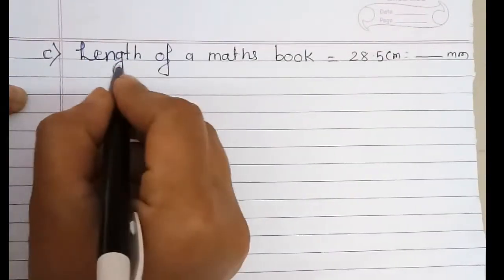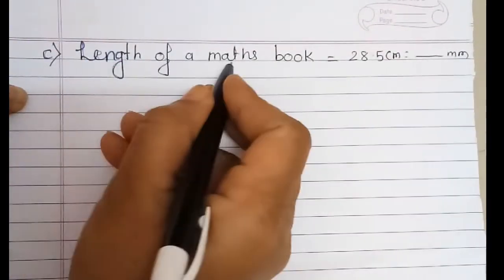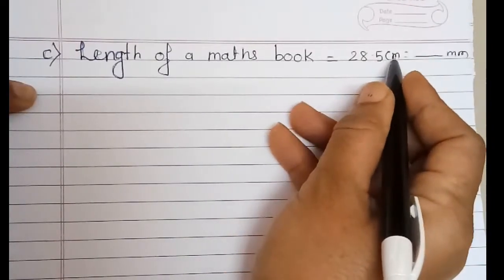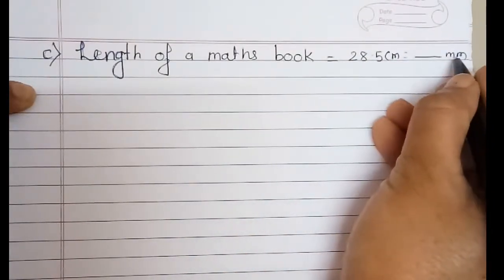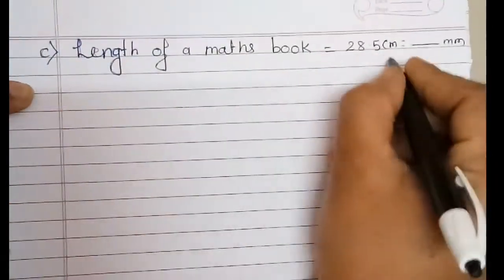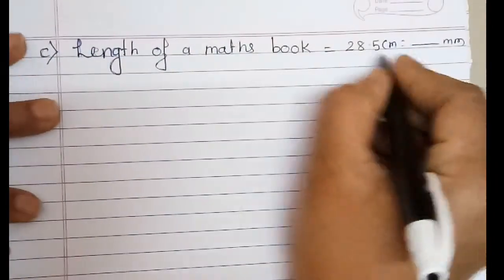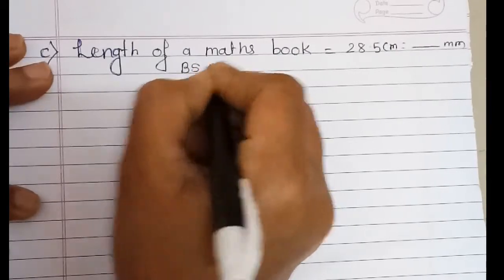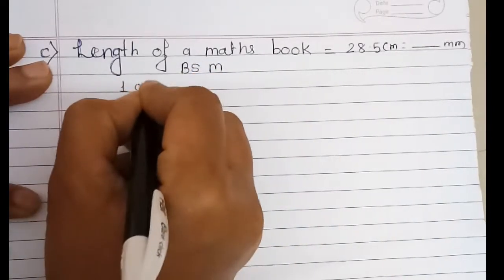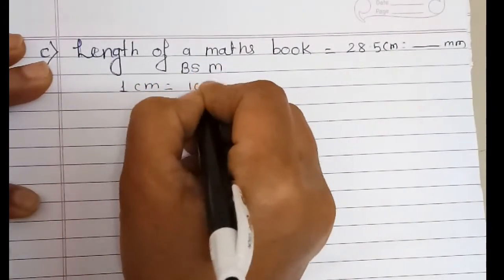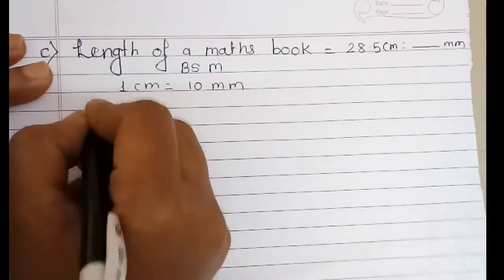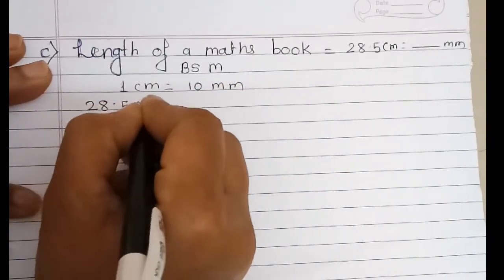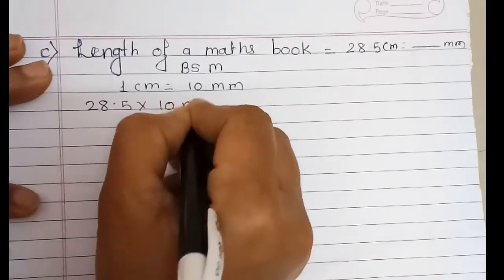Let's see the solution of C. The length of a math book is 28.5 centimeters. We have to convert that into millimeters. Big to small — we have to multiply. As we know, 1 centimeter equals 10 millimeters, so we have to multiply 28.5 by 10.